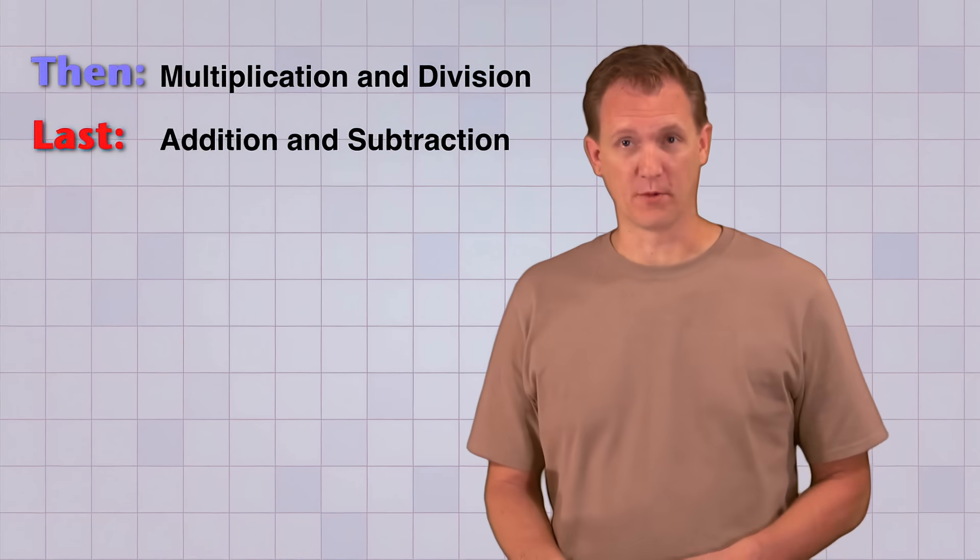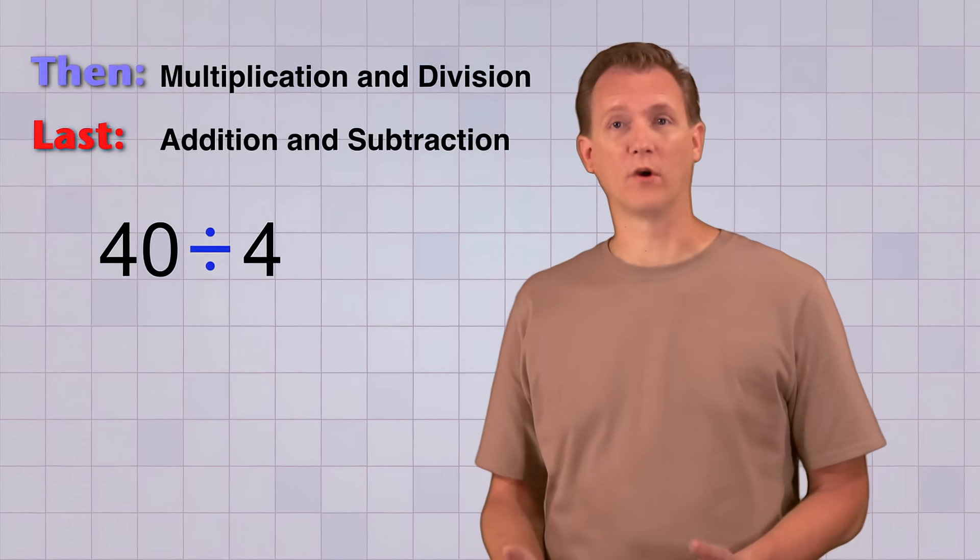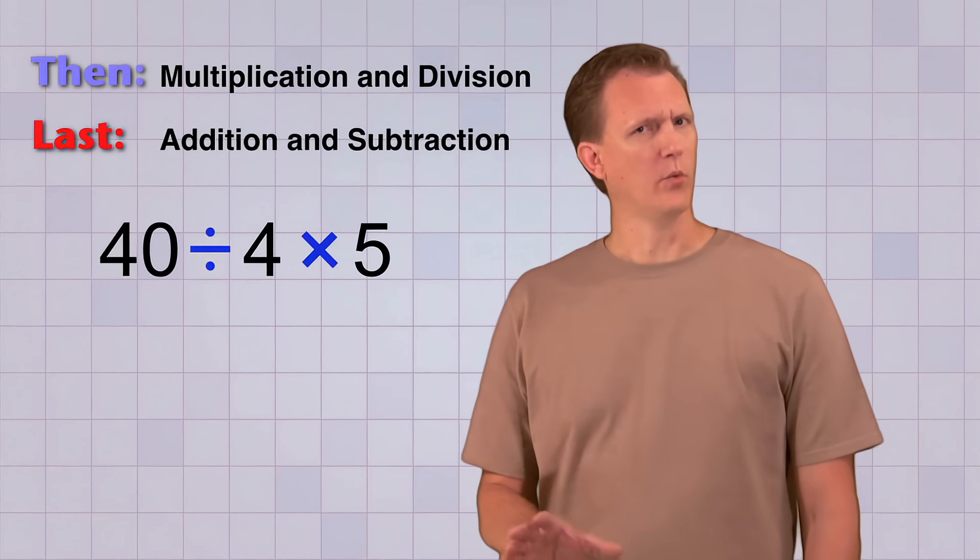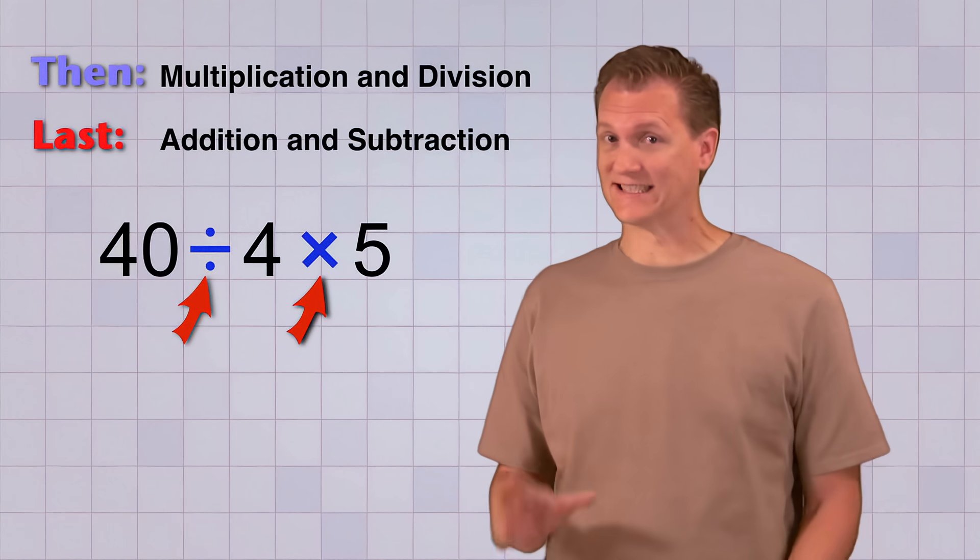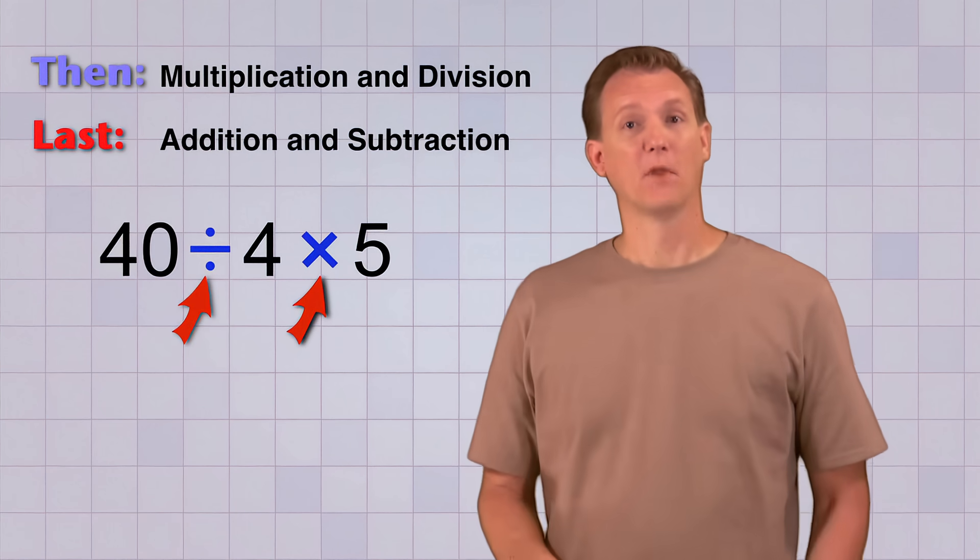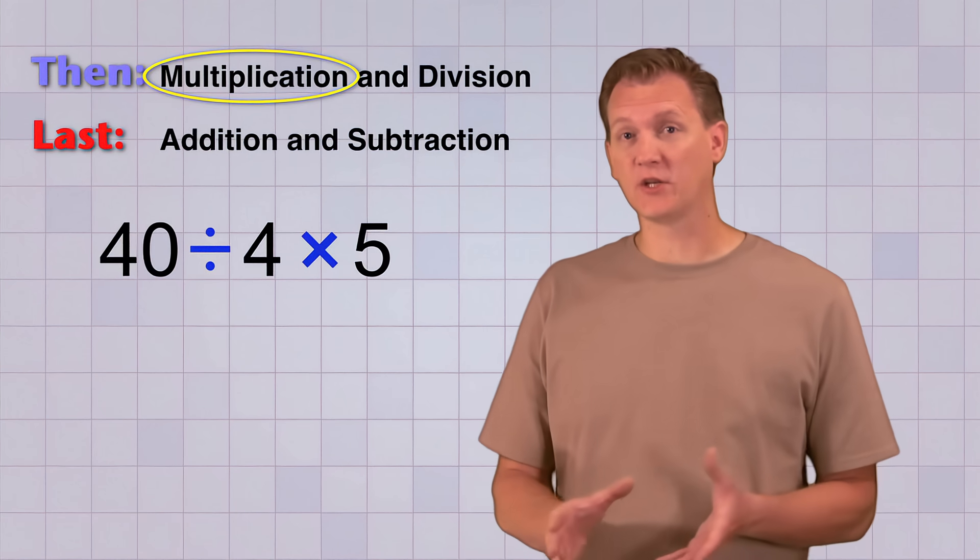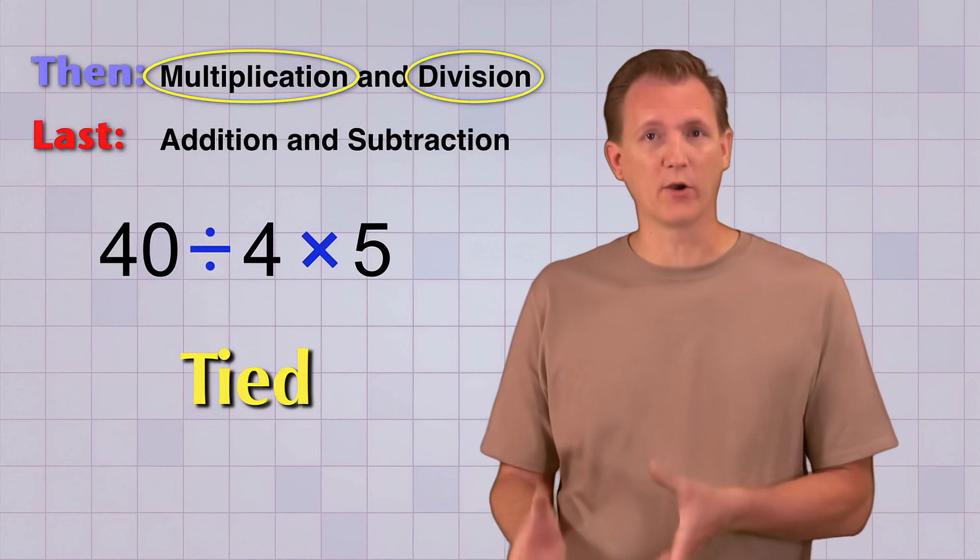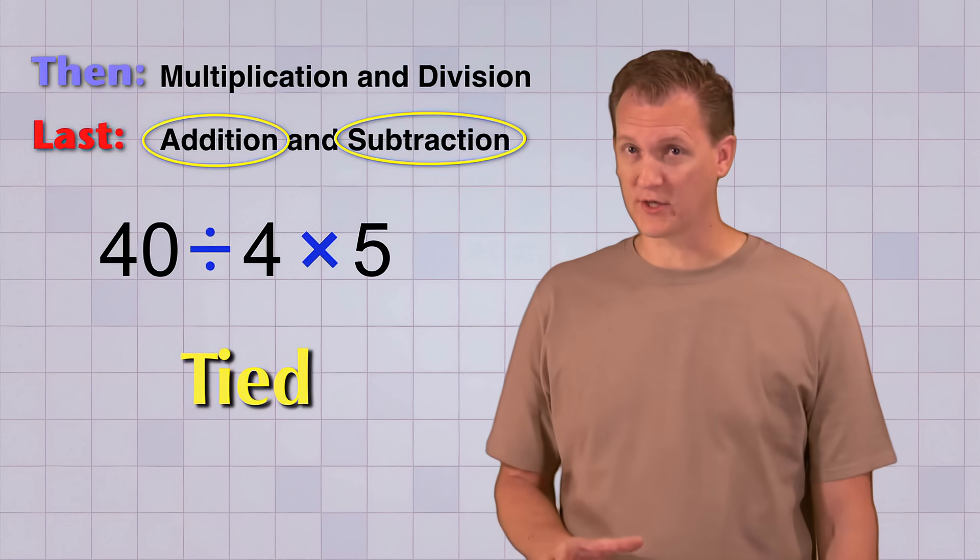And here's one last problem. 40 divided by 4 times 5. Which do we do first? The multiplication or division? Our rules don't tell us. Well, that's because multiplication and division are tied for priority or importance. So are addition and subtraction.